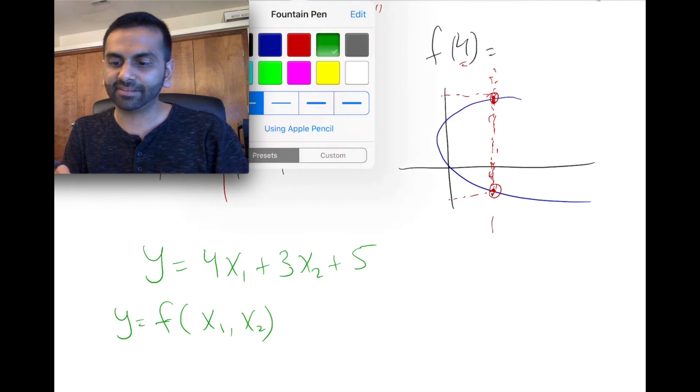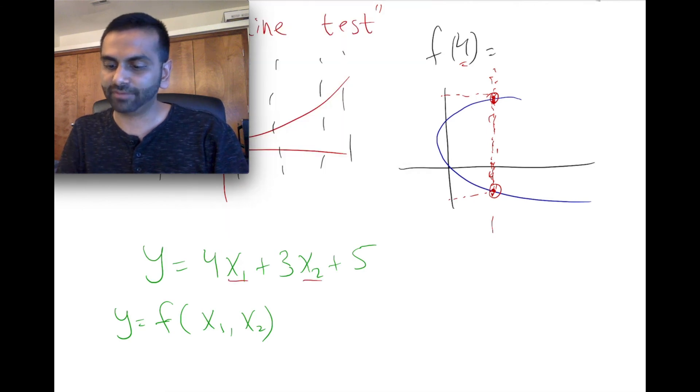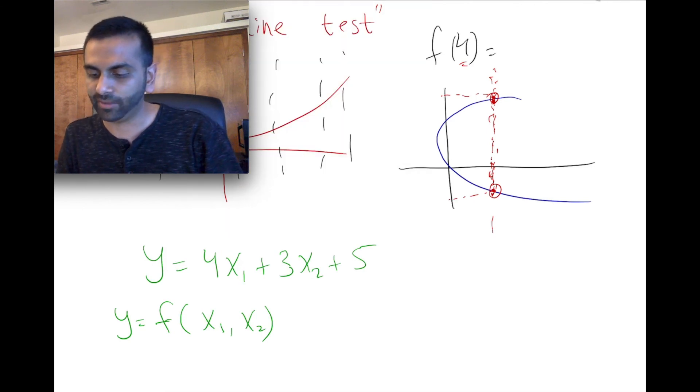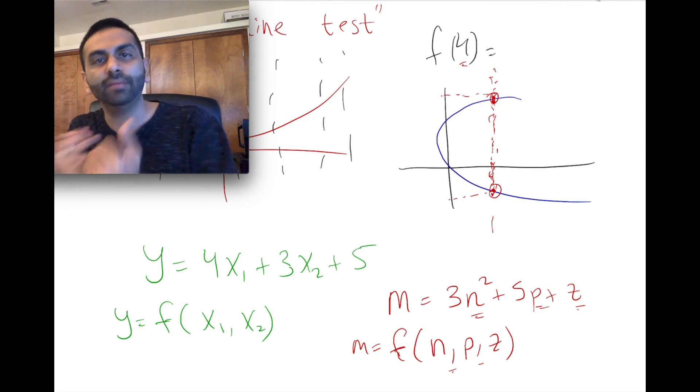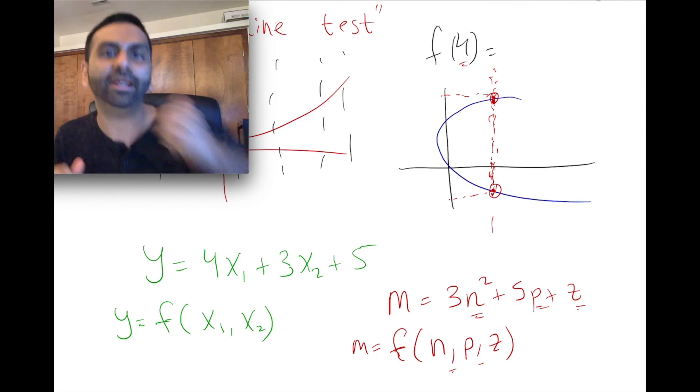And again, there's nothing special about these things with subscript. If I were to just give you literally like, m equals 3n squared plus 5p plus z, well, here, your function m is just like, it's a function of what are the, all the different input variables, n, p, and z. So really, anytime you see a function where on the inside there's commas, all that means is that there's more than one x variable that's being used to get your output.